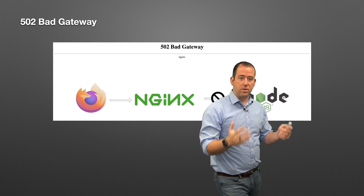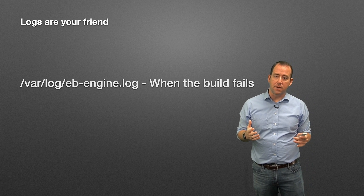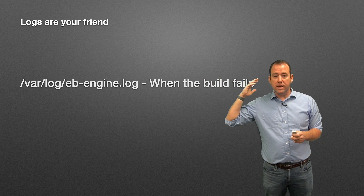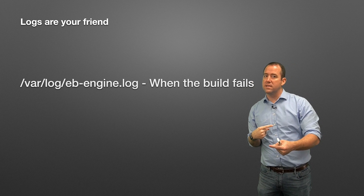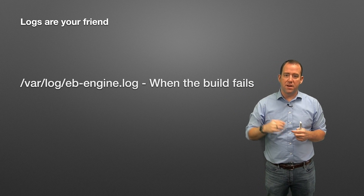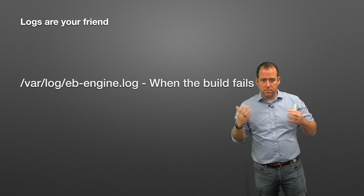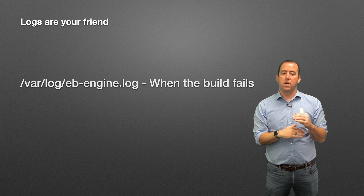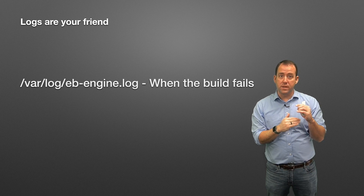The way to find what's wrong is with the logs. For cloud applications, logs are your friend — that's where you find errors. You often don't have a visible console for back-end errors. In Elastic Beanstalk, /var/log/eb-engine.log is where you look when the build fails — when something is wrong in your instructions to Elastic Beanstalk for how to run your application. Look at the bottom of the log for the most recent entries about a build failure.